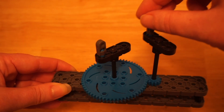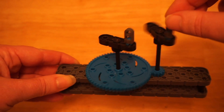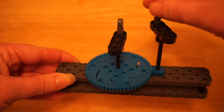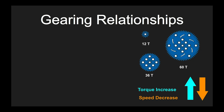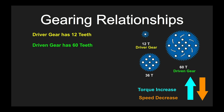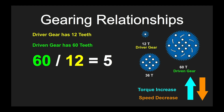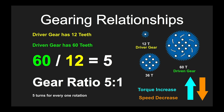1, 2, 3, 4, 5. So let's look at the calculations. This was a torque increase because the driver gear had only 12 teeth and the driven gear had a larger amount of teeth — 60. The calculation remains the same: we divide the larger number by the smaller one. 60 divided by 12 is equal to 5, giving us a gear ratio of 5 to 1. That's 5 turns of the smaller gear for every 1 turn of the larger.